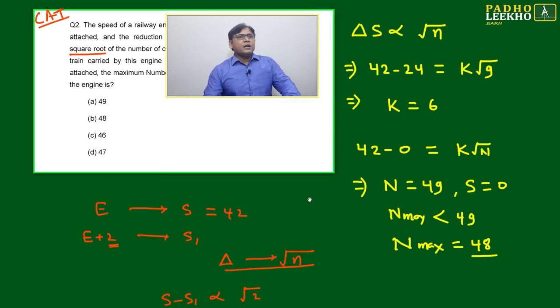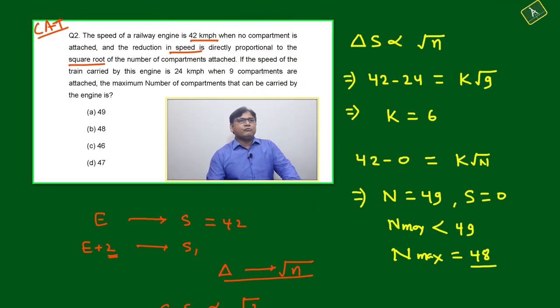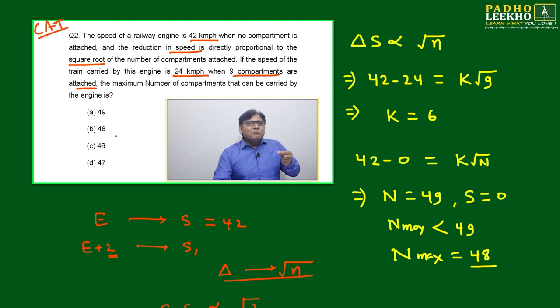This is a simple question. Now the question is asking what to find. If the speed of the train carried by the engine is 24 km per hour and nine compartments are attached, the maximum number of compartments that can be carried by the engine is?